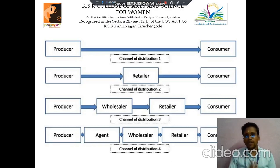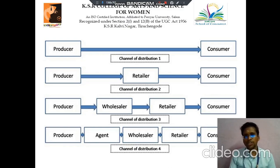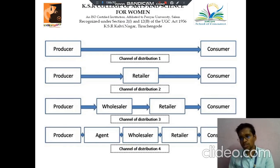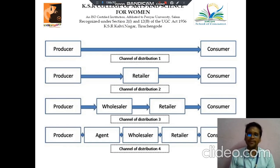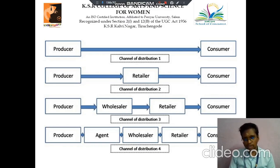Next, the channels of distribution. Channel one: the producer sends the goods directly to the consumer. Channel two: producer sends goods to retailer, then retailer sends goods to consumer. Channel three: producer sends goods to wholesaler, wholesaler sends to retailer, then retailer sends to consumer. Channel four: producer sends goods to agent, then agent to wholesaler, then wholesaler to retailer, then to consumer.